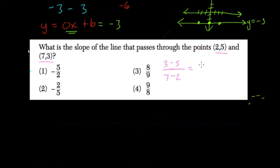3 minus 5 is negative 2. 7 minus 2 is 5, so we get negative 2 fifths. Choice 2.